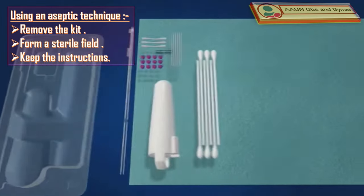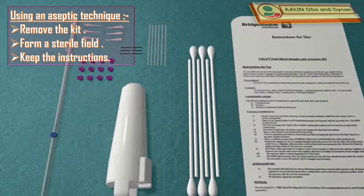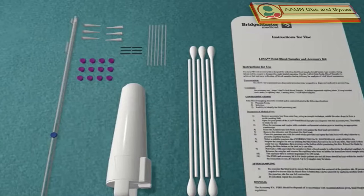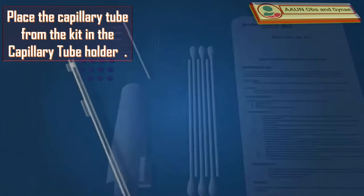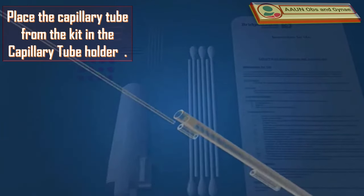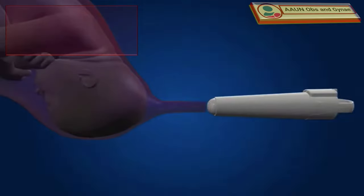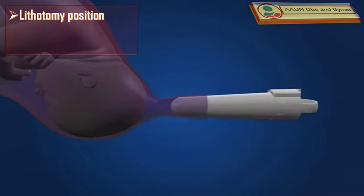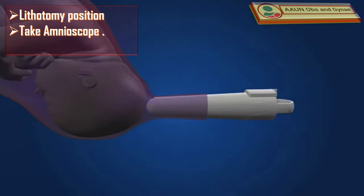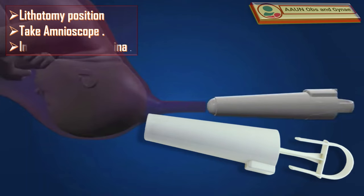You can see all these things here. Place the capillary tube from the kit in the capillary tube holder as you can see here. With the patient in lithotomy position, remove the amnioscope from the pack and insert it into the vagina with suitable lubricant if required.